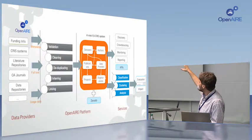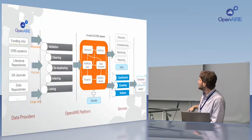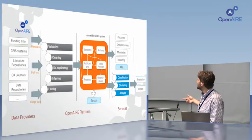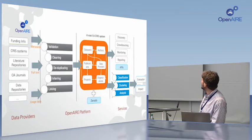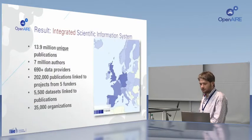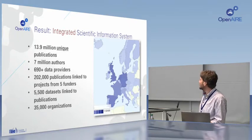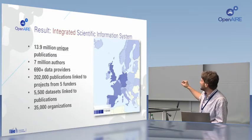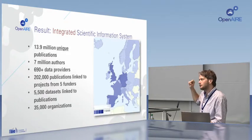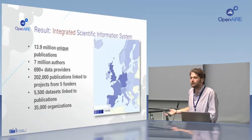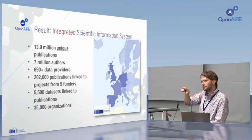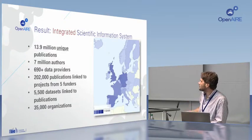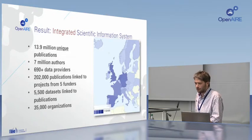Once we have all this information, our tech team does clever things with text and data mining to find which projects publications belong to, which institutions, and links the data to the publications. This allows things like discovery, monitoring, and reporting. The result is the OpenAIRE information space: 14 million publications, 7 million authors, more than 690 data providers, and lots of datasets and organizations linked to each other. The ideal is that the European Commission or any funders could see how many publications came from a project, with what impact, and check levels of compliance with open access.